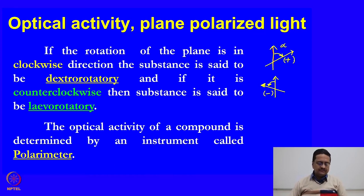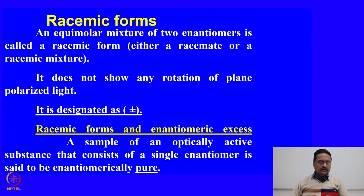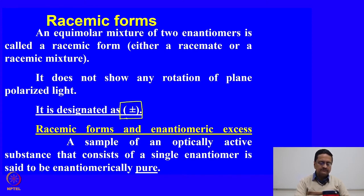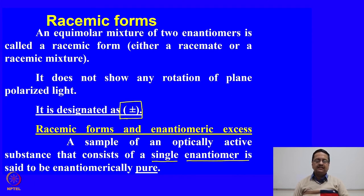The optical activity of a compound is determined by an instrument called a polarimeter. When we have an optically active compound, an equimolar mixture of two enantiomers is called a racemic form, racimate, or racemic mixture, which means both enantiomers are present in a 1:1 ratio giving rise to zero optical rotation. It is designated as a plus-minus compound. A sample containing a single pure enantiomer is said to be enantiomerically pure, and its optical activity identifies the specific rotation of that substance.